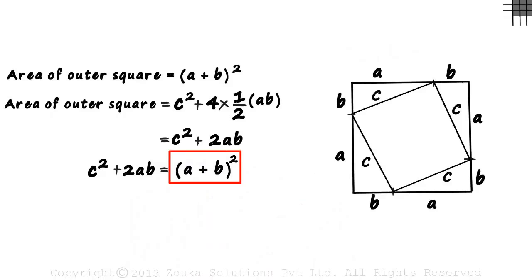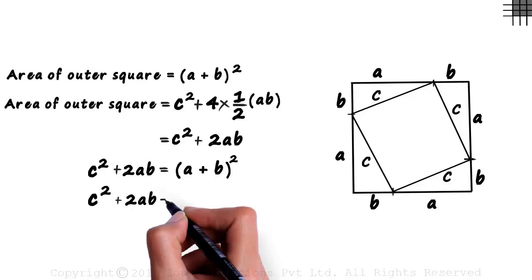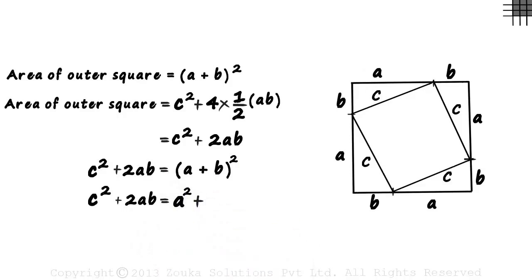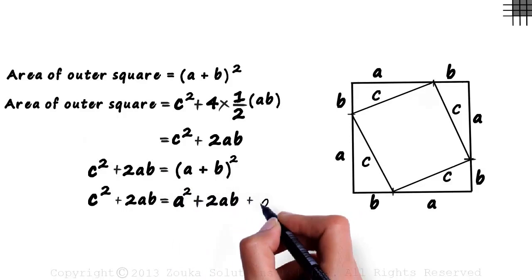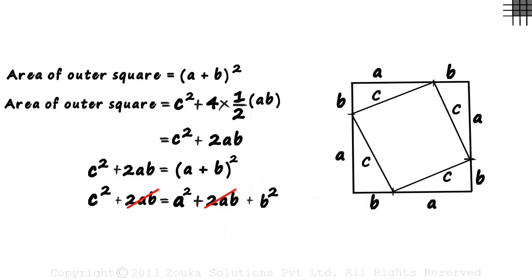And using the identity for A plus B the whole squared, we write this as C squared plus 2AB equals A squared plus 2AB plus B squared. And cancelling out 2AB from both the sides, we get C squared equal to A squared plus B squared. This is the Pythagoras Theorem. Thank you.